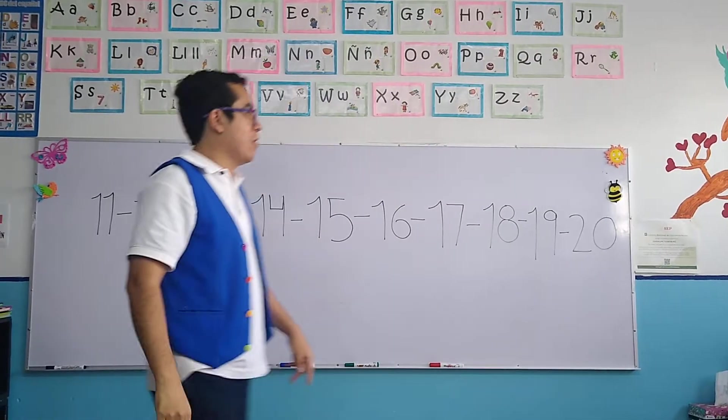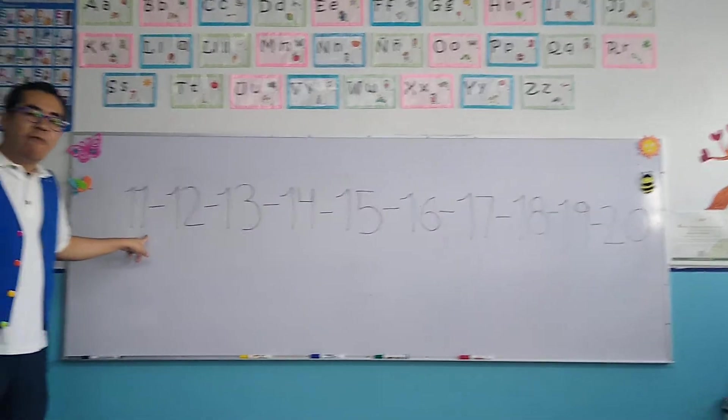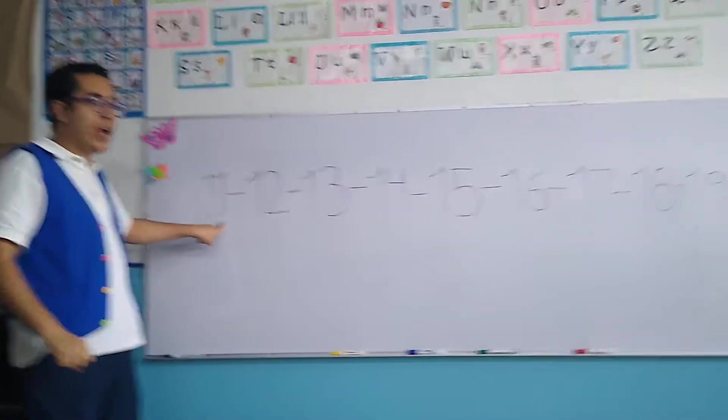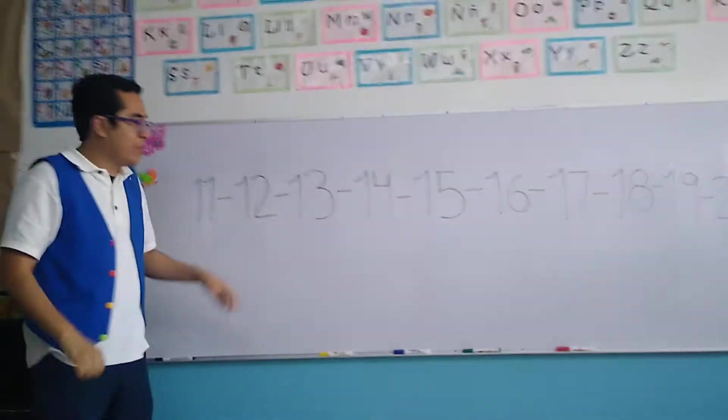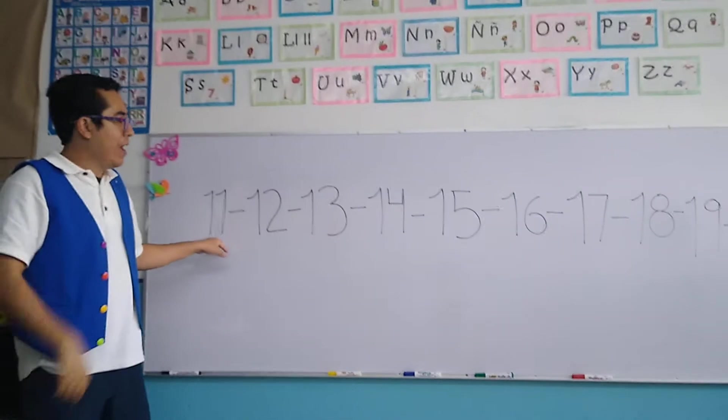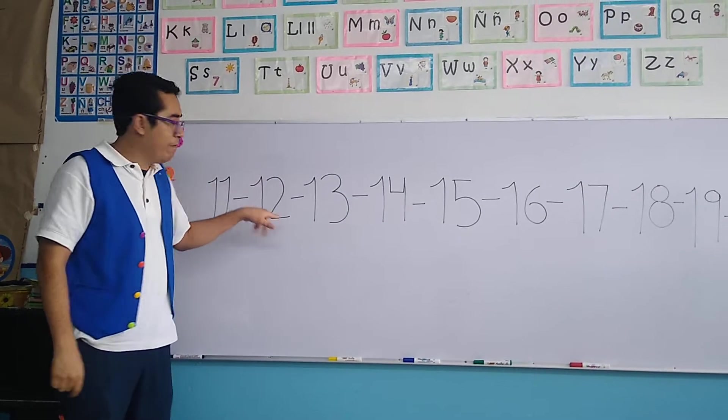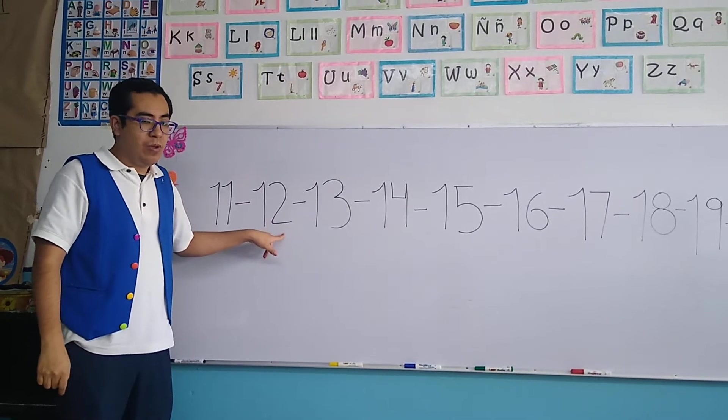Today, we are going to start with number 11. For number 11, we need two numbers, one and one. If we put them together, number 11. After 11, we continue with 12. For number 12, one and two.